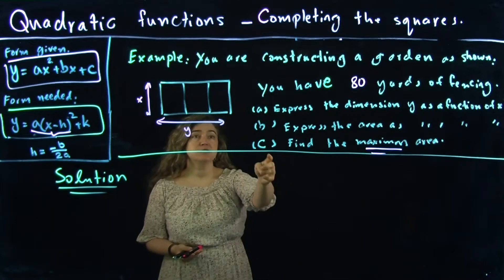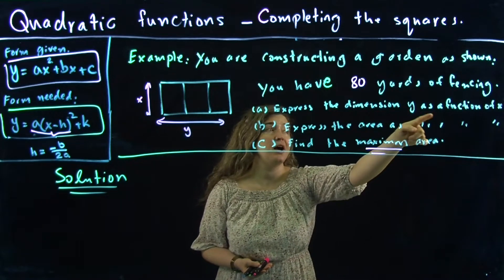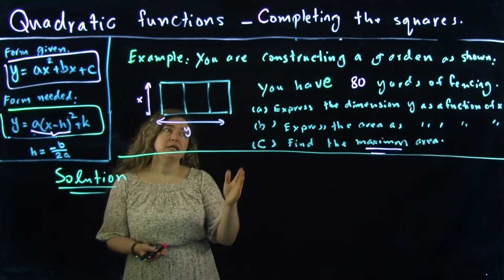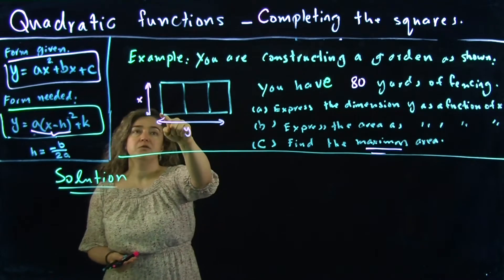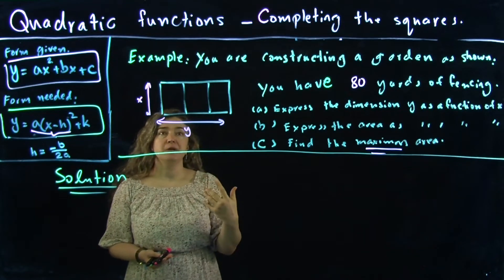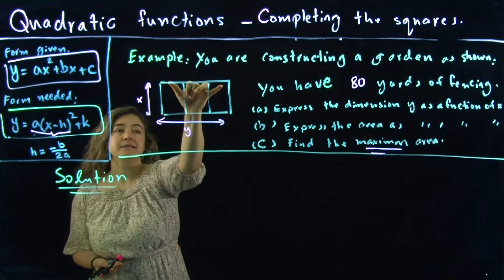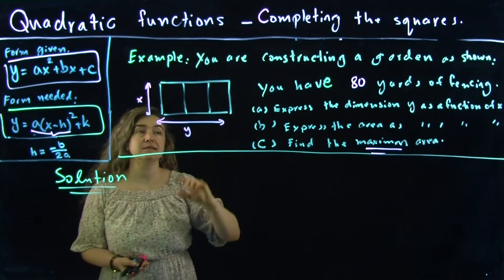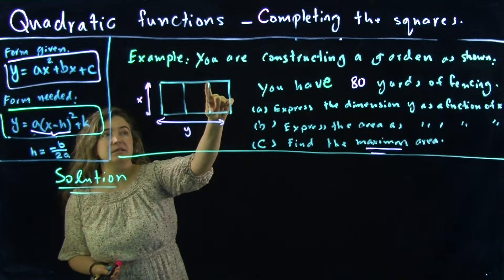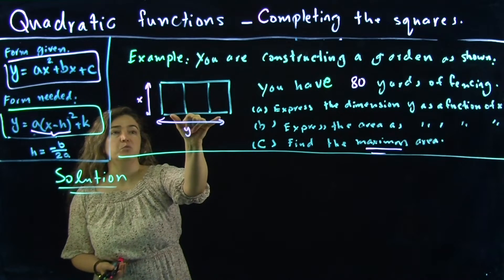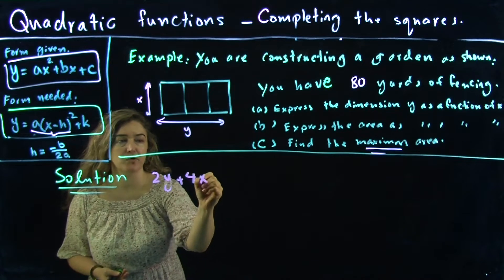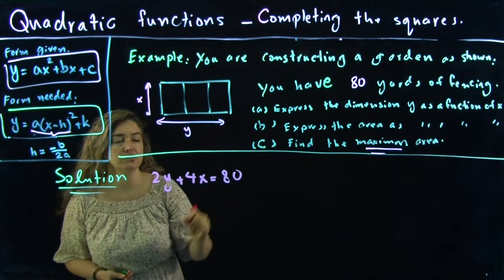It starts with: express the dimension y as a function of x. Using 80 yards of fencing, it goes along each side and the dividers. We can add up all the lengths: 1x, 2x, 3x, 4x, and then 1y, 2y. So 2y plus 4x equals 80 yards.